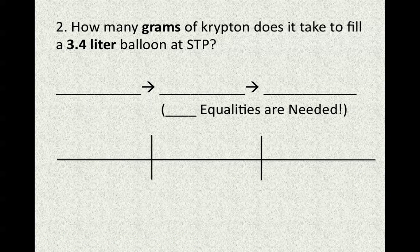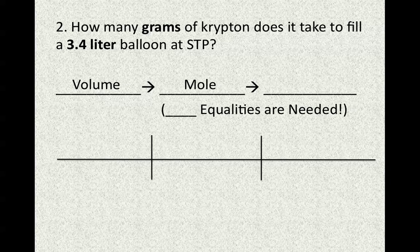Looking at another example: how many grams of krypton does it take to fill a 3.4 liter balloon at STP? Again, we're working with one substance. Our units are liters and grams — neither is moles — so we'll need two equalities. We go from our starting unit of liters (volume) to moles, and then from moles to our target unit of grams (mass). So we need two equalities again.